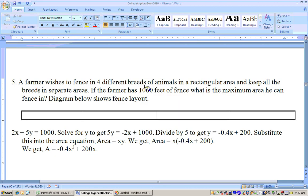Okay, on problem five, it says the farmer wishes to fence in four different breeds of animals, and he has 1,000 feet of fence. So we have two X distances, the top and the bottom, and five Y distances. One, two, three, four, five. So 2X plus 5Y equals that 1,000 feet of fence.